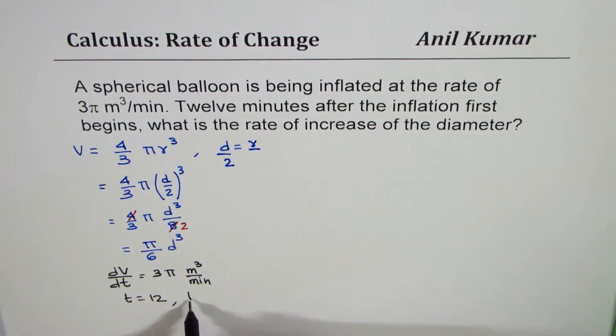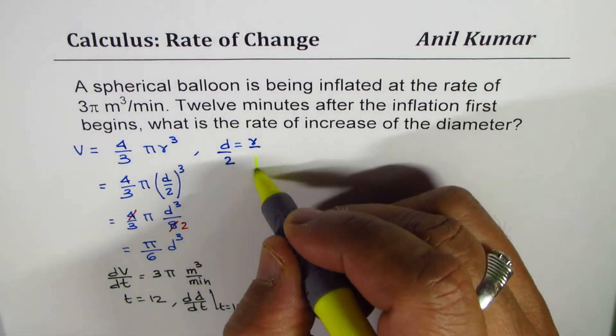For diameter d, dd/dt is what we have to find at t equals 12. That is the question for us. I hope that is absolutely clear.